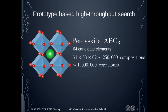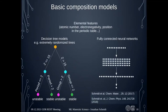We usually take a prototype crystal structure to do this efficiently — for example perovskites — and check which elements we can fill in for positions A, B, and C, and which ones will be stable. If we take 64 candidate elements, we arrive at 250,000 compositions, requiring maybe a million core hours — still feasible. But if we want to do thousands of prototypes, larger less-symmetric structures, or even quaternary or quinary structures, this quickly becomes impossible with DFT alone. Here is where machine learning comes in: to predict the distance to the convex hull instead of calculating it with DFT.